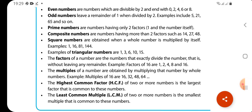Factors of a number are the numbers that exactly divide the number, that is, without leaving any remainder. Multiples of a number are obtained by multiplying that number by whole numbers. Example, multiples of 16 are 16, 32, 48. Highest common factor is the largest factor that is common to those numbers. The least common multiple of 2 or more numbers is the smallest multiple that is common to those numbers.